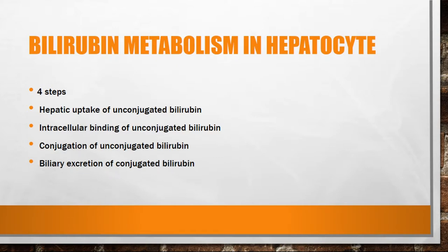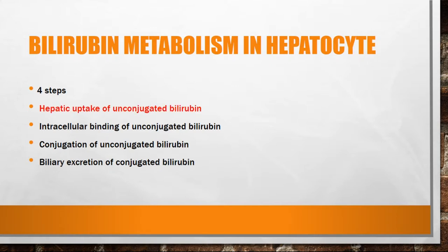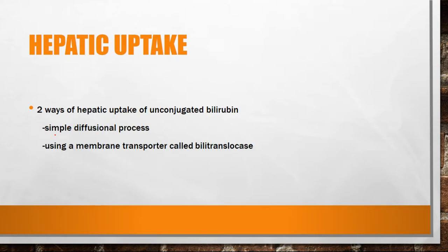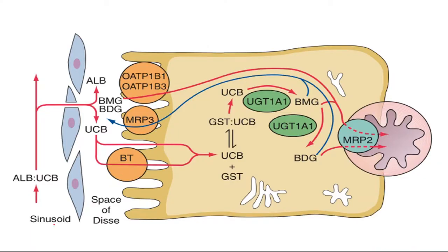Bilirubin metabolism in hepatocytes occurs in four steps. The first is hepatic uptake of unconjugated bilirubin. The liver takes unconjugated bilirubin in two ways: first by a simple diffusional process, and second using a membrane transporter called bilitranslocase. The albumin-unconjugated bilirubin complex comes from the reticuloendothelial system through the blood, reaches the space of Disse, where they dissociate, and unconjugated bilirubin enters the hepatocyte either by simple diffusion or through the bilitranslocase transporter.